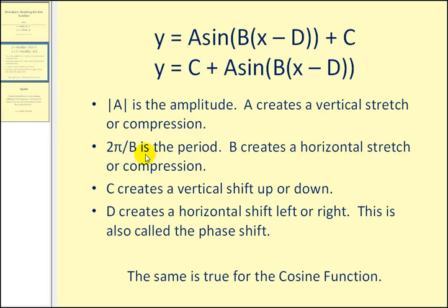Two pi divided by B will give us the period of the sine function. B creates a horizontal stretch or compression.